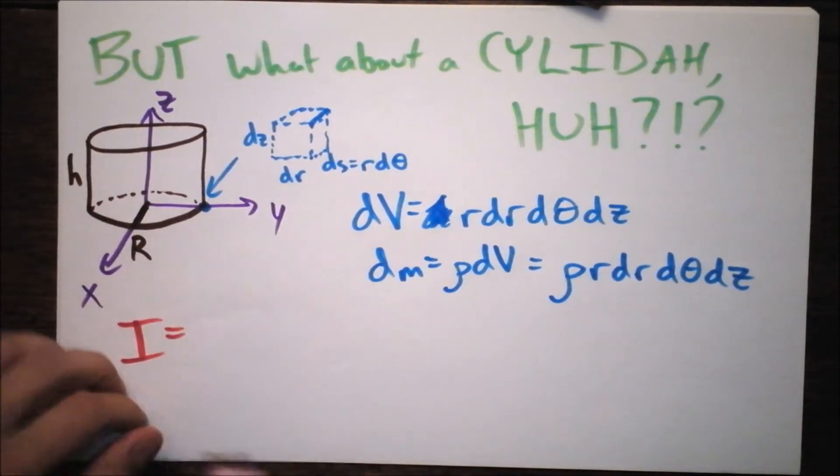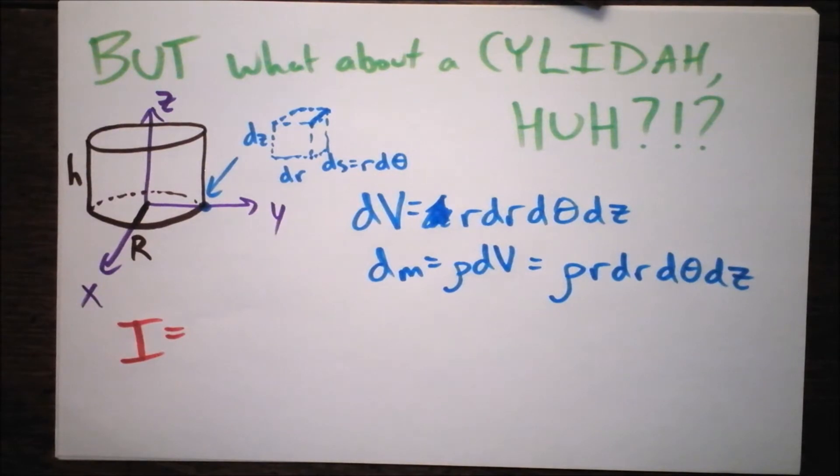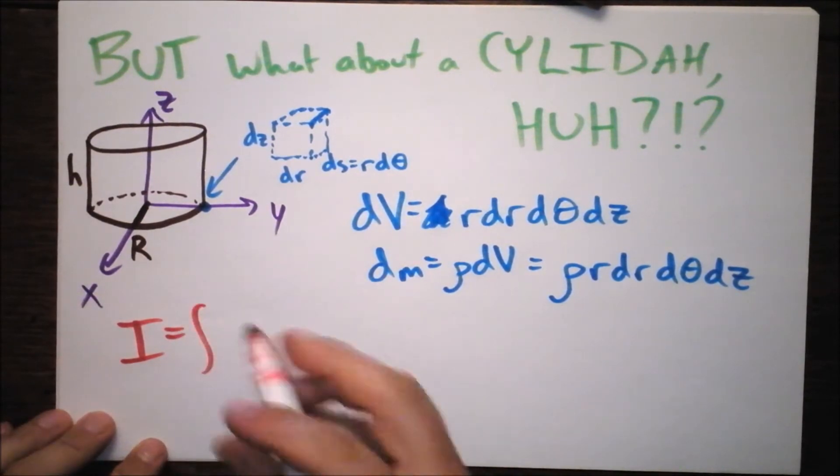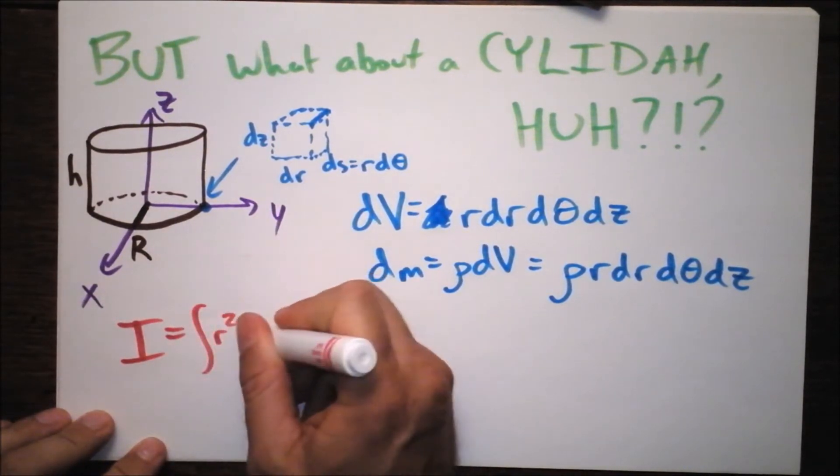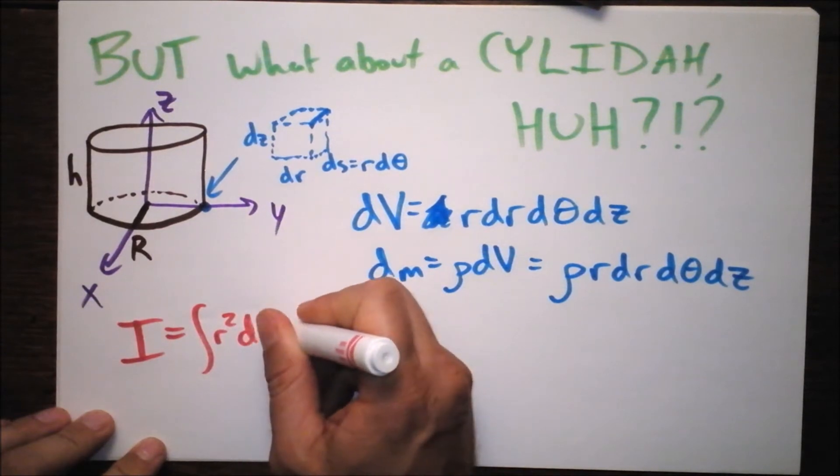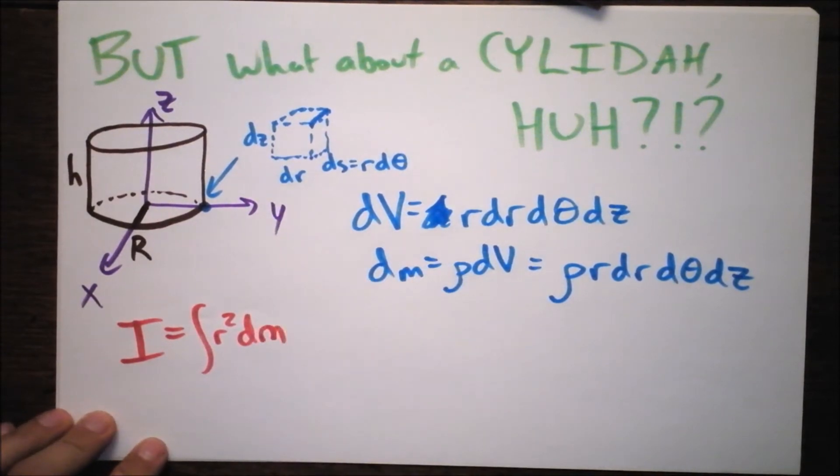Don't worry. We're doing this absolutely trivial problem just for you. I don't know why you're not doing it. I'm supposed to take the R square, DM.